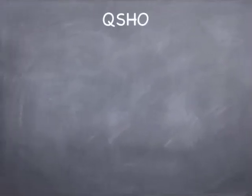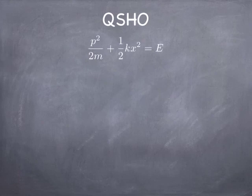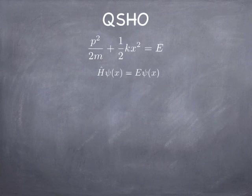What about the quantum simple harmonic oscillator? We can start with the same energy idea, but now we're going to convert it into an operator. So energy now becomes the Hamiltonian operator that acts on a wave function. We're looking for wave functions that have the property that the Hamiltonian hitting the wave function produces a number times the same wave function back again. Wave functions that have that property are called eigenfunctions, and the number you get is called an eigenvalue. Finding these functions is what we're going to be doing most of today.